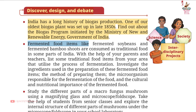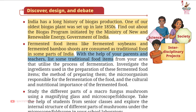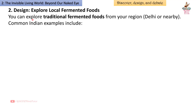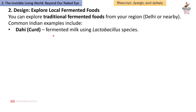Second — fermented food items like fermented soybeans and bamboo shoots are consumed as traditional food in some parts of India. With the help of parents and teachers, list traditional fermented foods from your area and investigate the ingredients, preparation method, microorganism responsible, and cultural and nutritional importance. Answer: Common Indian examples include dahi (curd), fermented milk using Lactobacillus species.